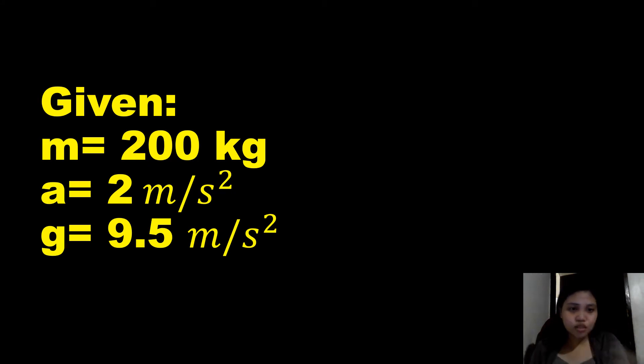First things first is to write the given. When solving problems, we need to write or put the given data so that it is easy for us to solve problems. The given mass is 200 kilograms, acceleration is 2 meters per second squared, and the gravitational acceleration is 9.5 meters per second squared.